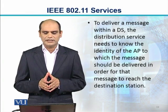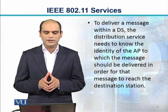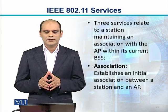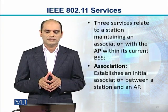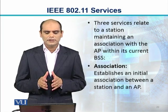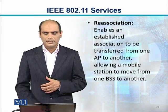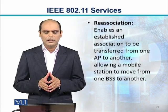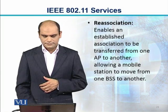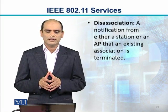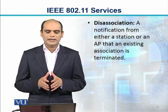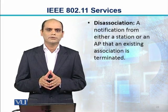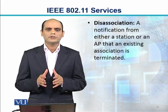To deliver a message within a DS, the distribution service needs to know the identity of the AP to which the message should be delivered in order for that message to reach the destination station. Three services relate to a station maintaining an association with the AP of its current BSS. Association establishes an initial association between a station and an AP. Re-association enables an established association to be transferred from one AP to another, allowing a mobile station to move from one BSS to another. Dis-association is a notification from either a station or an AP that an existing association is terminated. These are the various services provided by the IEEE 802.11 wireless LAN, which are equivalent to those of a wired LAN.